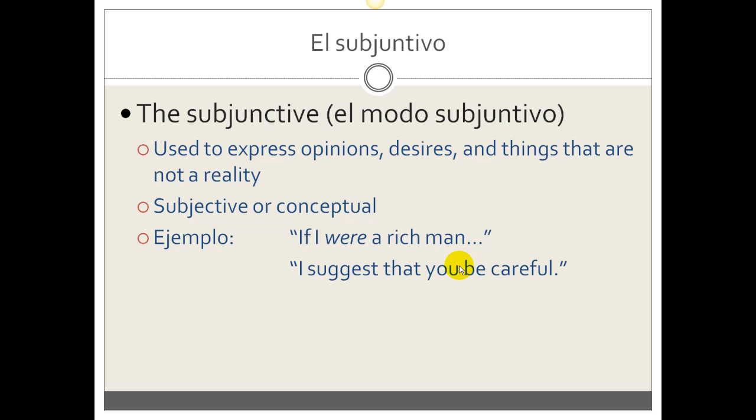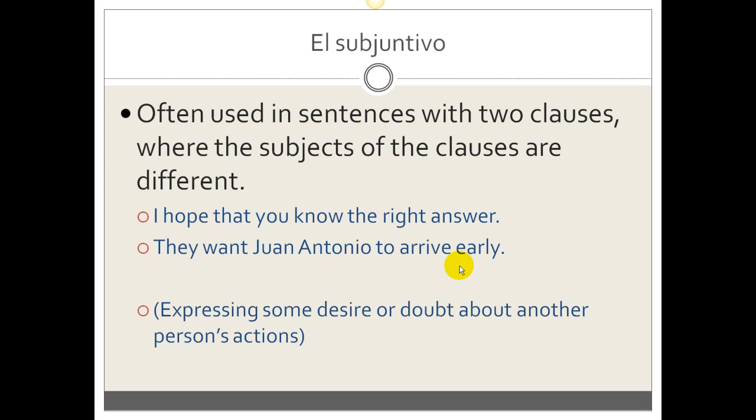So let's look at more examples of the subjunctive mood in Spanish. The Spanish subjunctive is often used in sentences with two clauses, two separate parts of the sentence. Each one has its own verb, where the subjects of the clauses are different.